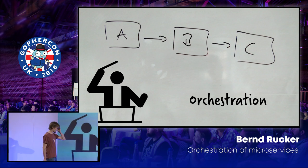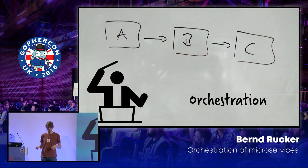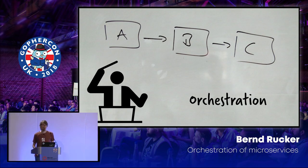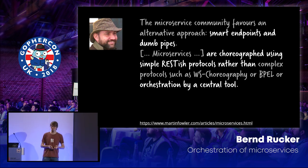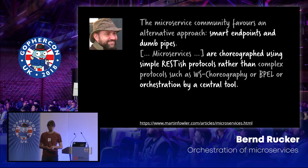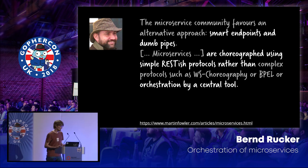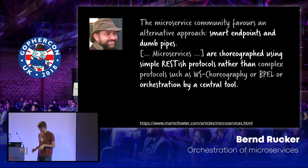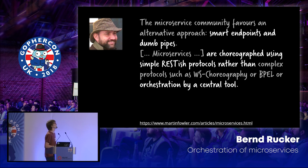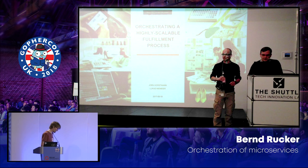Let's spend the last few minutes on orchestration. I named the talk 'orchestration.' What I showed you is basically a couple of different workflow models — normally this kind of sequence thing. That's orchestration. Whenever I say workflow engine or state machine, that's kind of an orchestration. And if you look at the microservice community, they're not that much in favor of orchestration nowadays. That started with one article from Martin Fowler, where he said 'the microservice community favors an alternative approach: smart endpoints, dumb pipes.' Then he said we're much in favor of choreographing things and not using some central orchestrator.